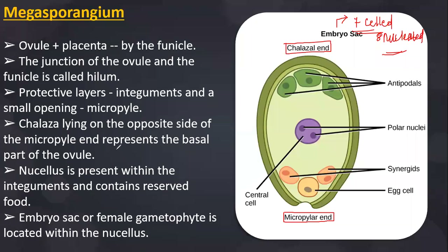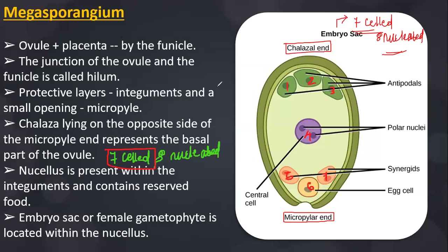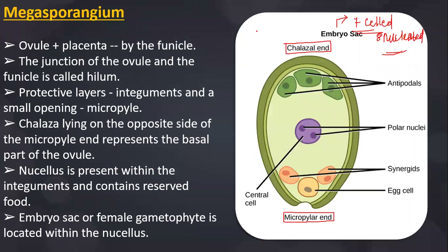A matured embryo sac is 7-celled but consists of 8 nuclei. Let's count: cell 1, 2, 3, 4, 5, 6, 7 — 7 cells. Nucleus 1, 2, 3, 4, 5, 6, 7, 8 — 8 nuclei. It is an 8-nucleated, 7-celled condition. This is at least 15 times a repeated MCQ question — very, very important.